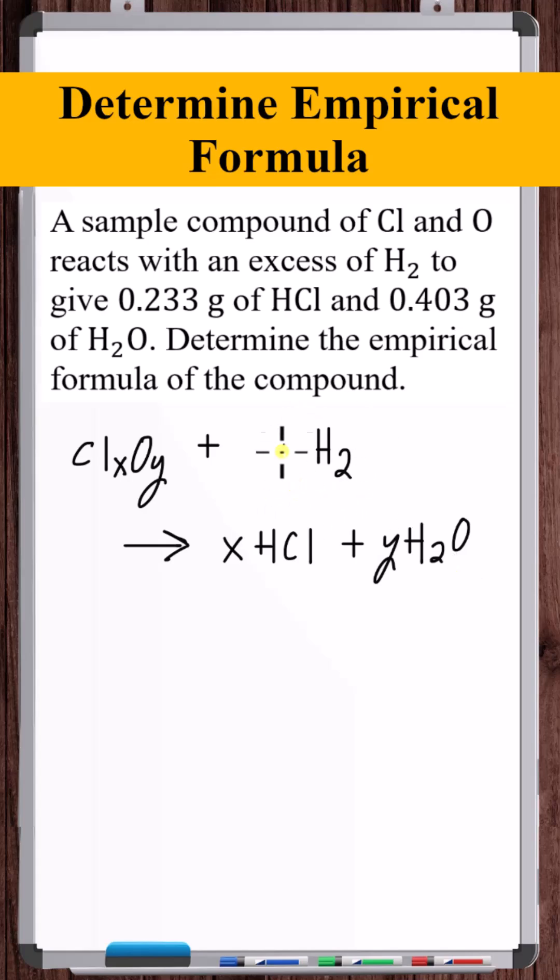So now all we're left with is the hydrogen by itself. If we said this coefficient is Z, then 2Z is equal to X plus 2Y. So now solving for Z, Z is equal to Y plus X divided by 2.